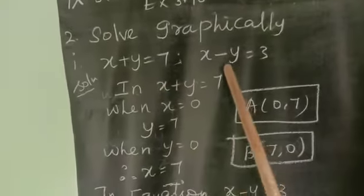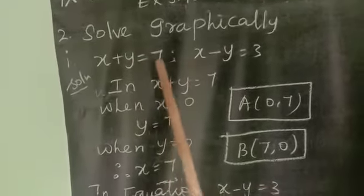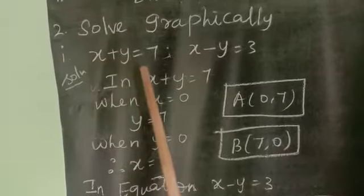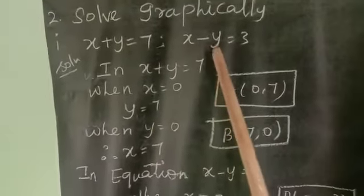There are given two equations. x plus y is equal to 7, x minus y is equal to 3.